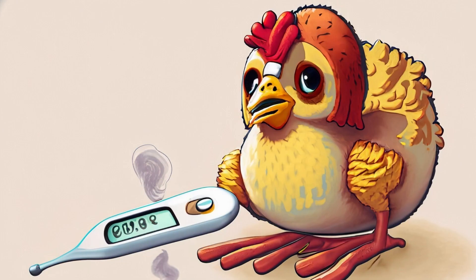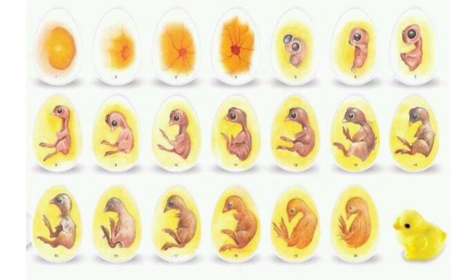On day one, the embryonic tissue begins forming. On day two, tissue development is very visible and blood vessels also appear. By day three, the heart is beating and the blood vessels are visible. Day four is the first really important day for incubation because it's the first day you can candle your eggs to check for viability. On day four you should be able to see some veins surrounding a dark blob.